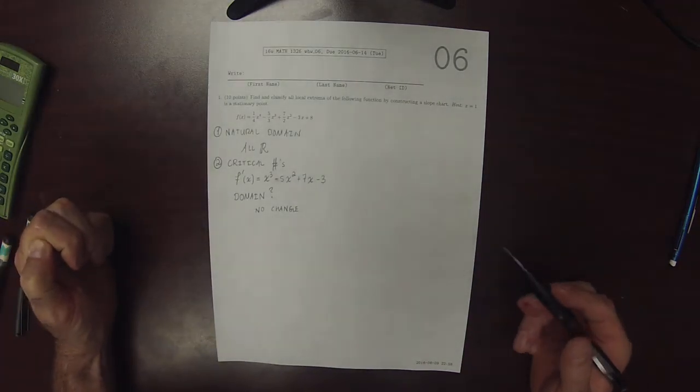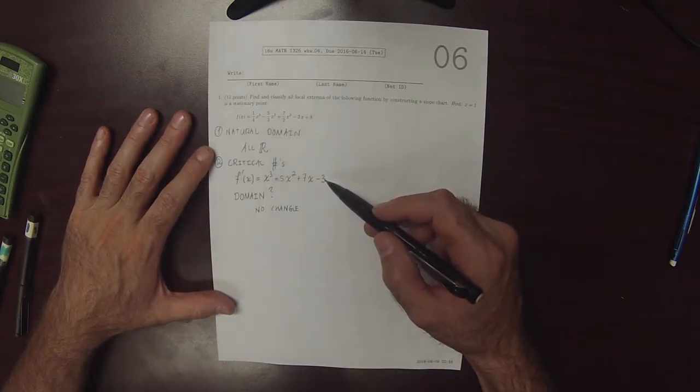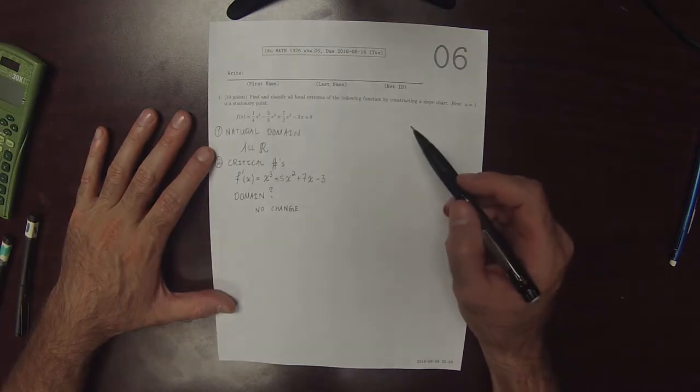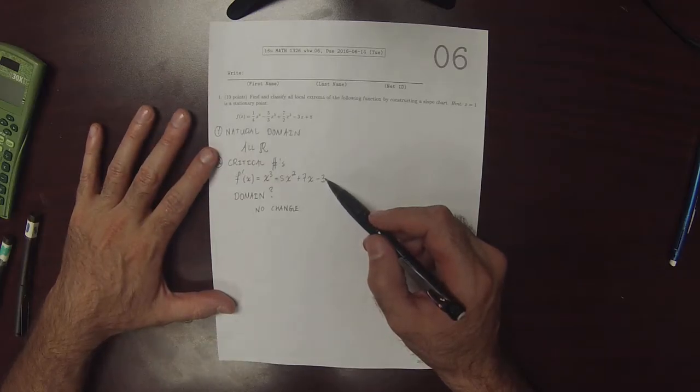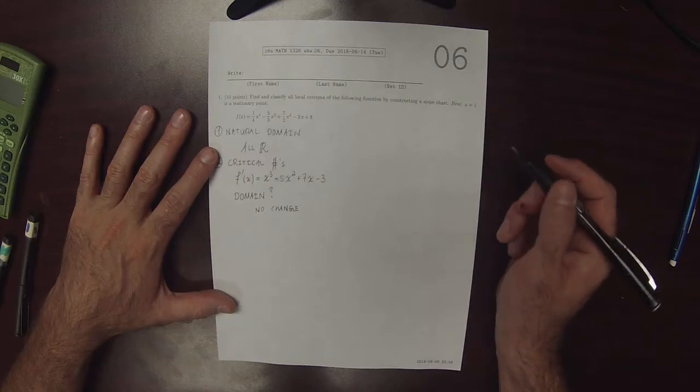So we want to factor this cubic. And if you had access to something like Wolfram Alpha or an algebra system, then you could request it to factor this, but you don't. So, here's the hint that x = 1 is a stationary point.